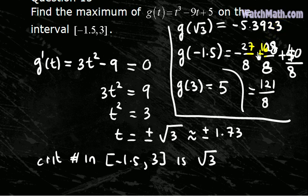So then the maximum occurred when t equals 3, because this one is bigger than that one. So this is the maximum.